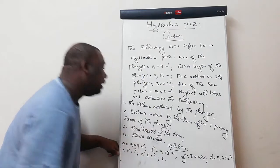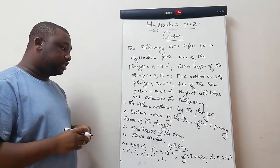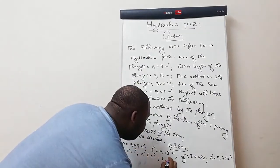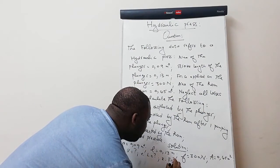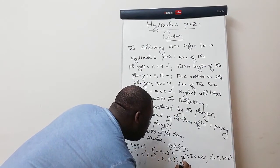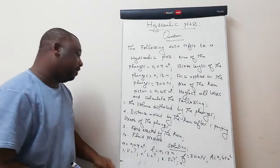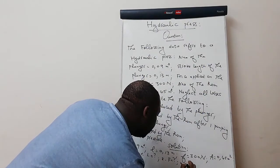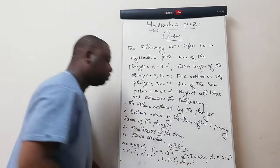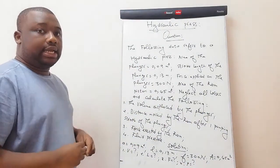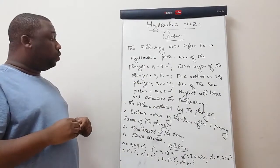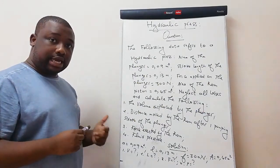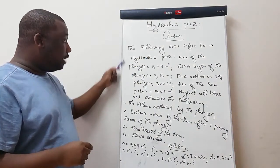Neglecting all losses, calculate: (1) volume displaced by the plunger (V), (2) distance moved by the ram after one pumping stroke of the plunger (big L), (3) force exerted by the ram (big F), and (4) the fluid pressure (P).